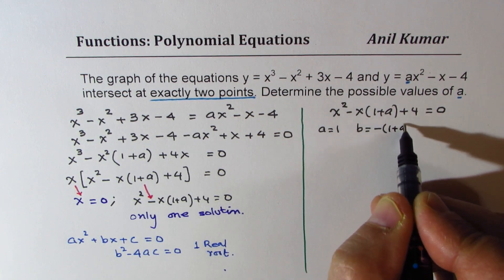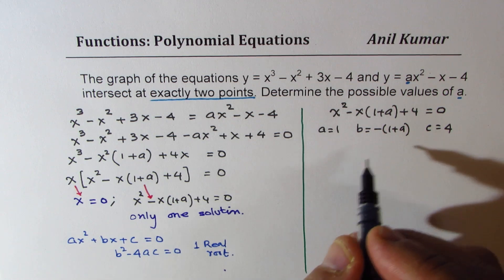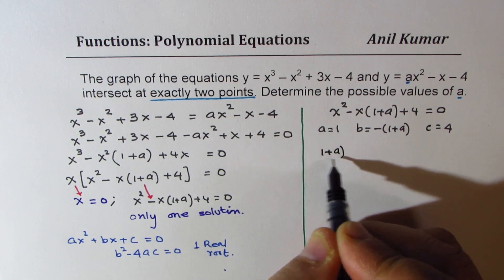Now here, a is 1, right? B is equal to minus 1 plus a, and c is equal to 4. So b squared minus 4ac means 1 plus a whole squared.